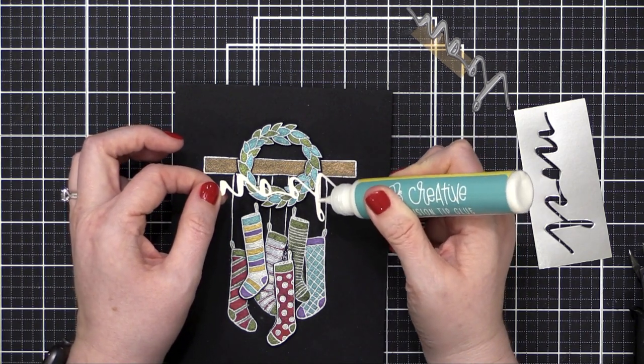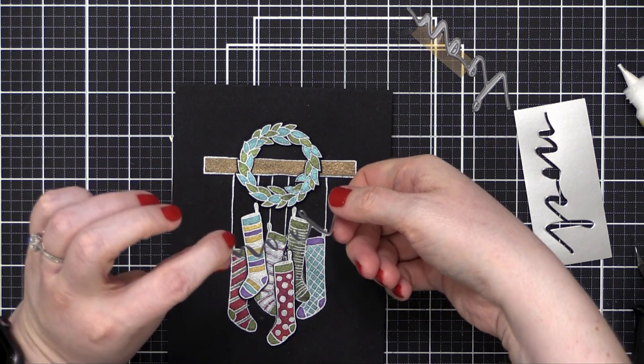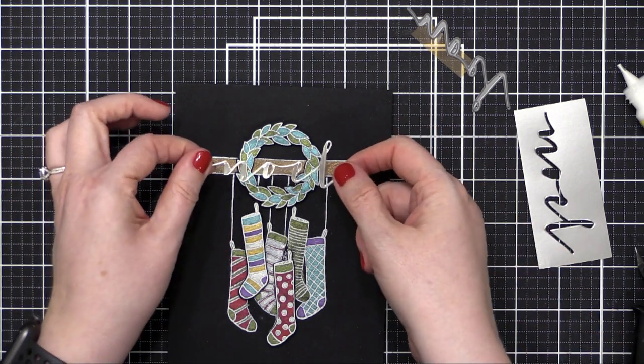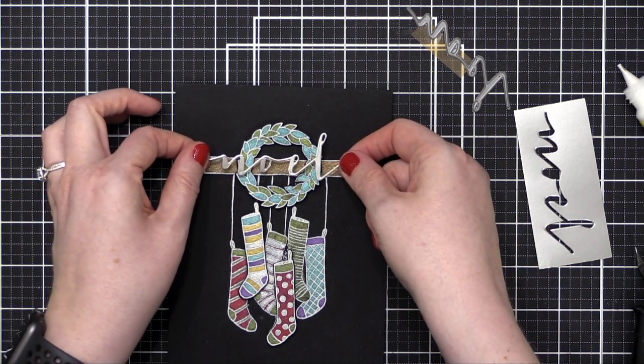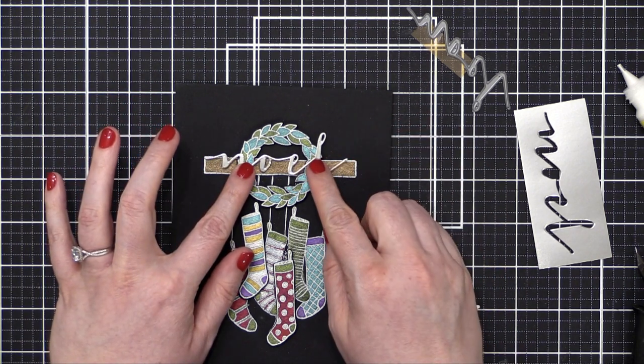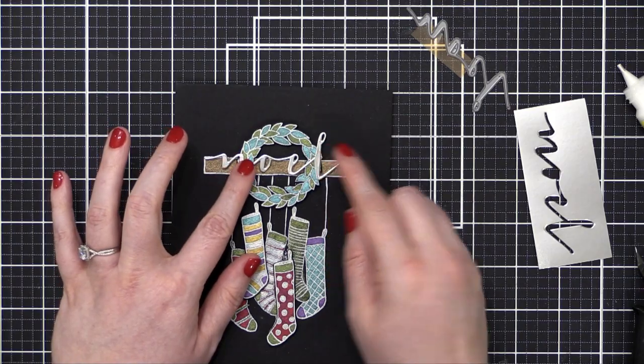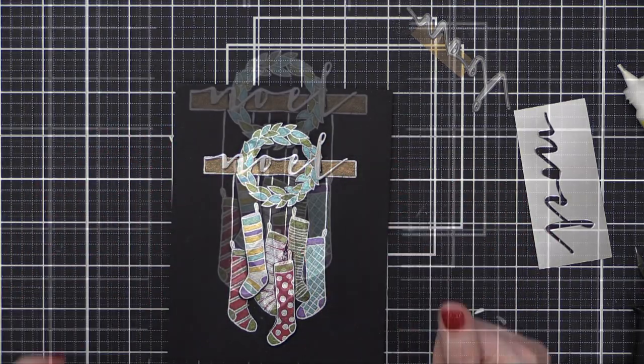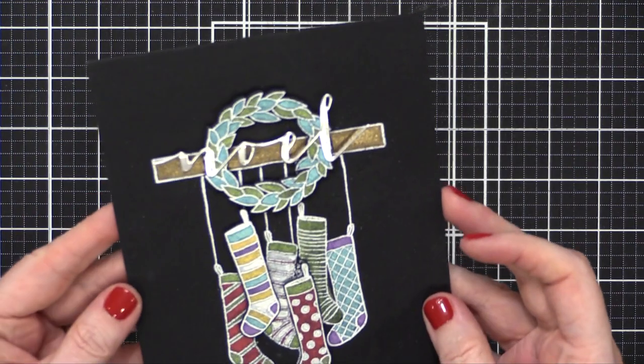I put some precision glue from Honey Bee on the back of the word just where it overlaps the wreath and then pressed that down right over the center area of that mantle. I really love how this looks, like that layered effect with the mantle and then the wreath and then the word on top. I think it looks really special.